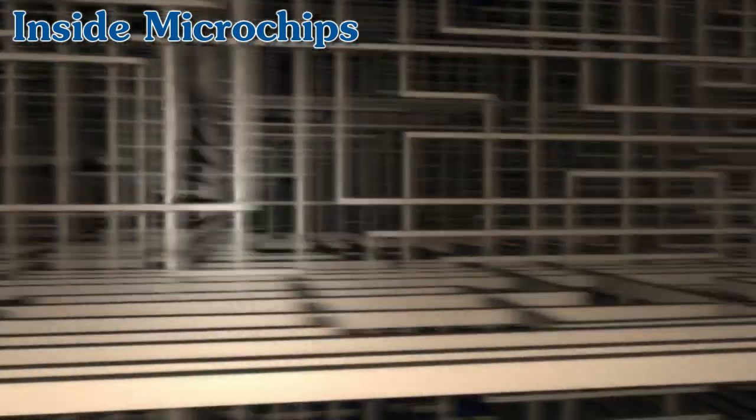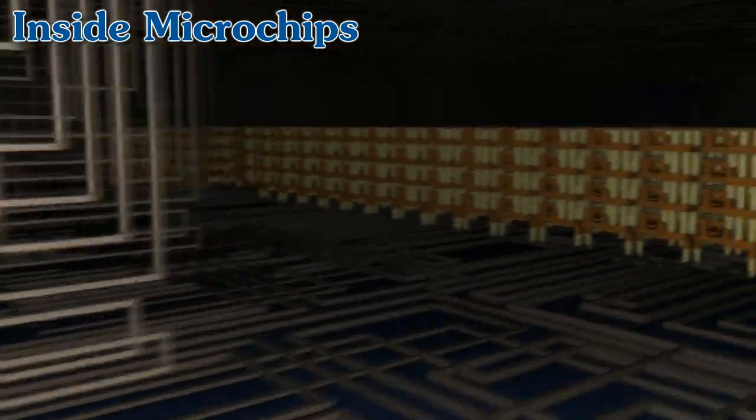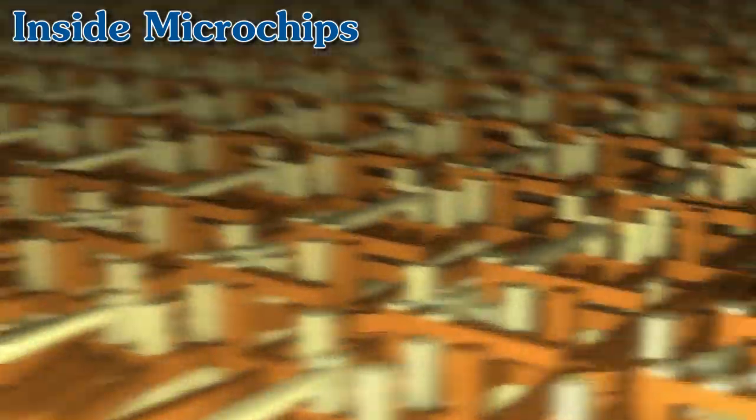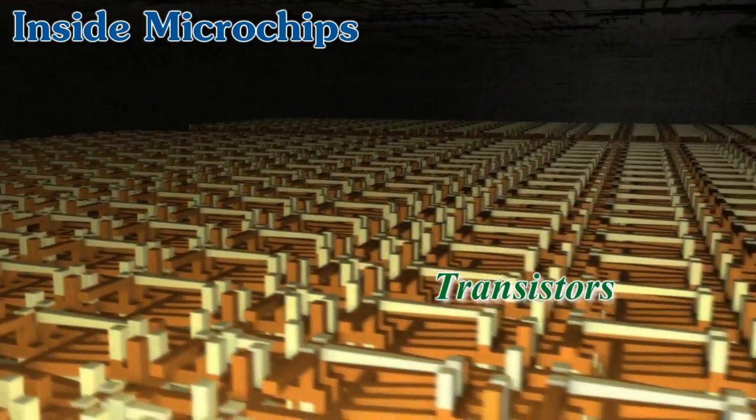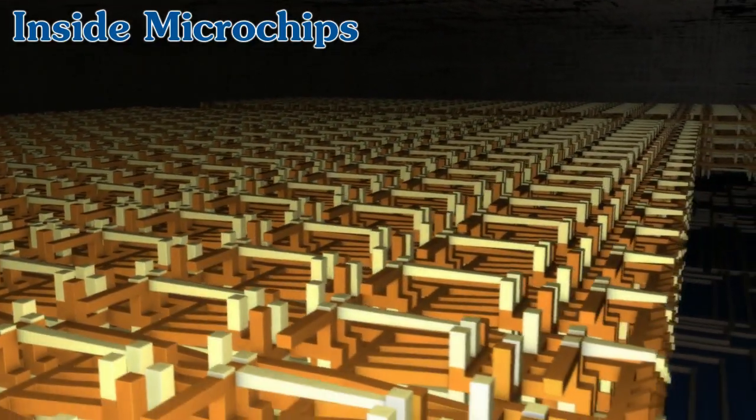Amongst all the microscopic wiring, tiny electrical switches called transistors are the brain of a microchip. Transistors enable the chip to make decisions and produce useful results based on some form of input.